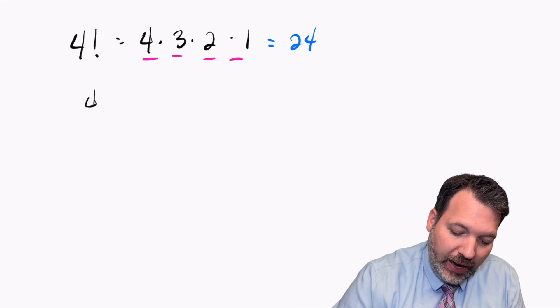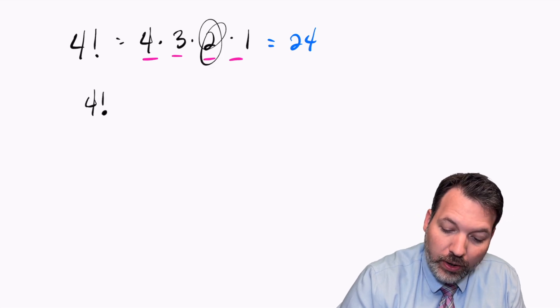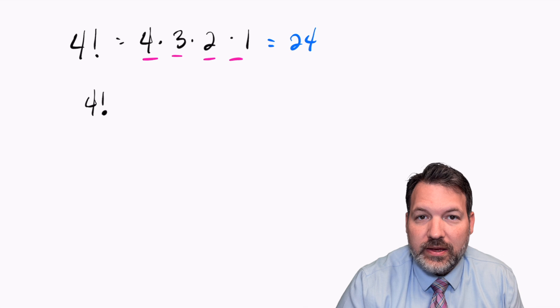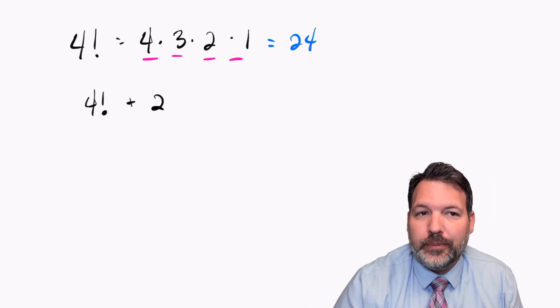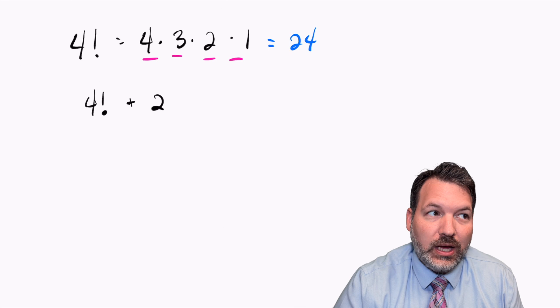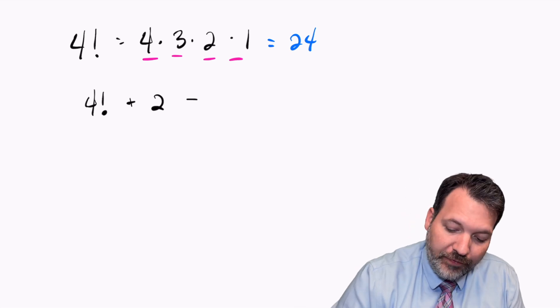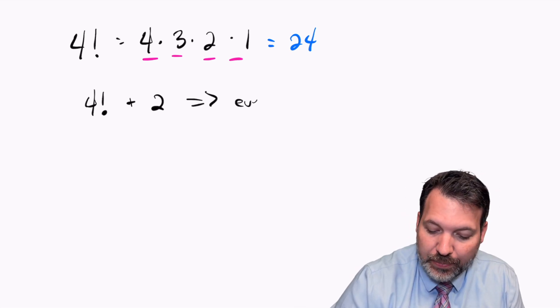Because 4 factorial has, among its factors, 2, that means that 4 factorial is even. And if 4 factorial is even, any even number plus another 2 makes another even number. So 4 factorial plus 2 must be even.